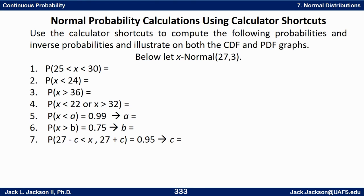I'm going to do an example of each main type. In all examples, X is a normal random variable with mean 27 and standard deviation 3. We'll do: a between probability P(25 < X < 30), a left tail probability P(X < 24), a right tail probability P(X > 36), and a two-tail probability P(X < 22 or X > 32).